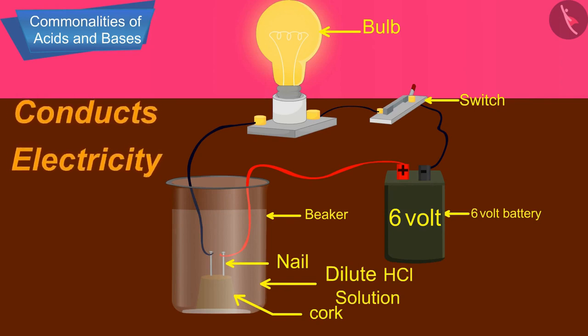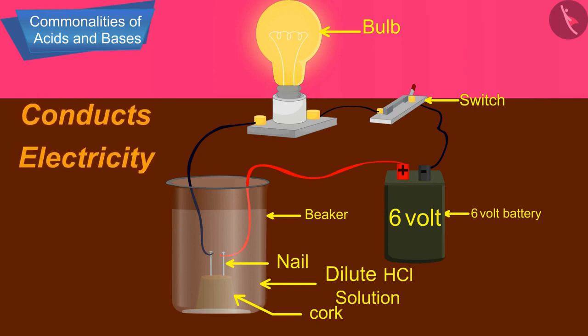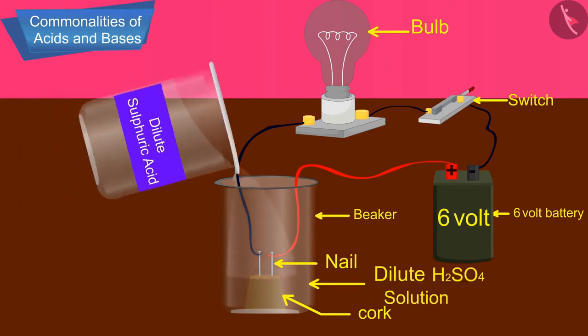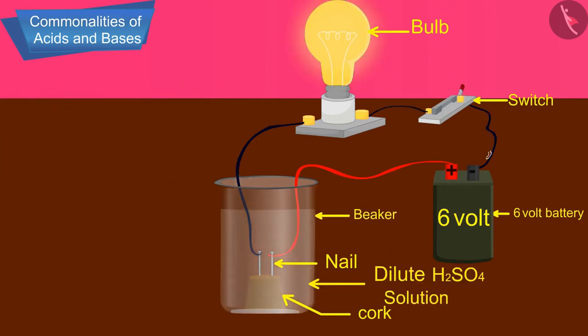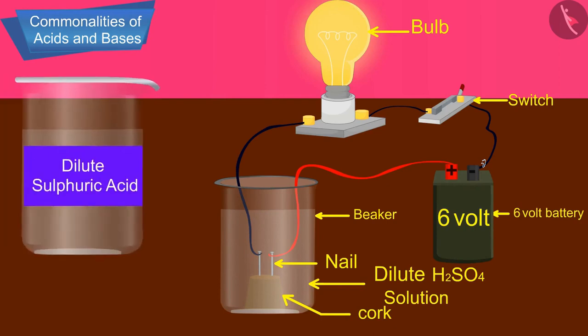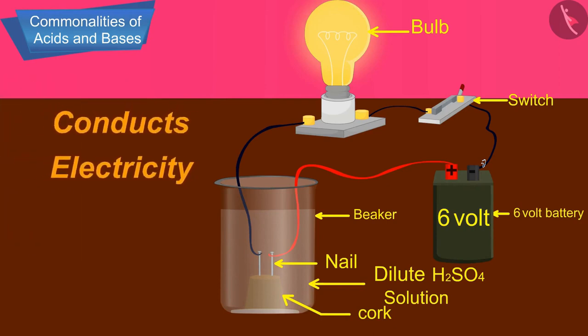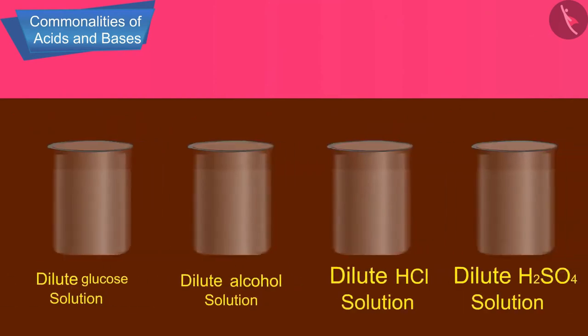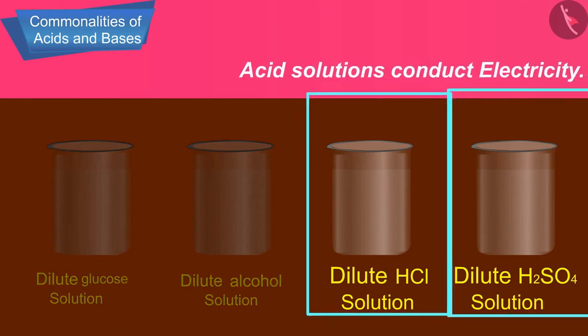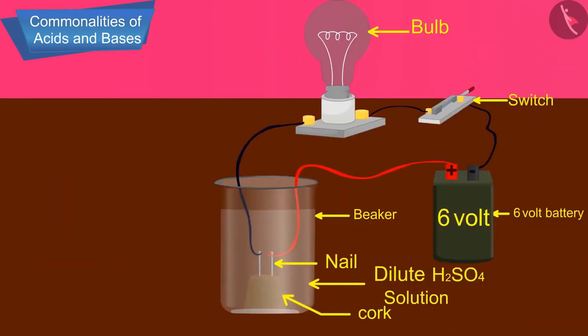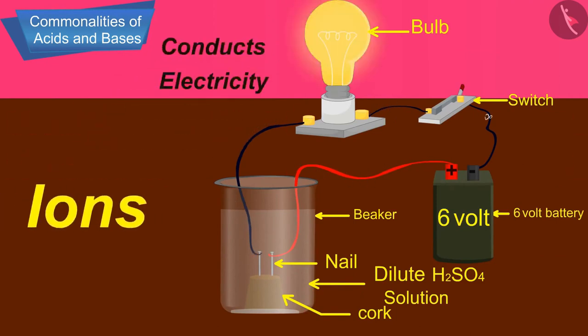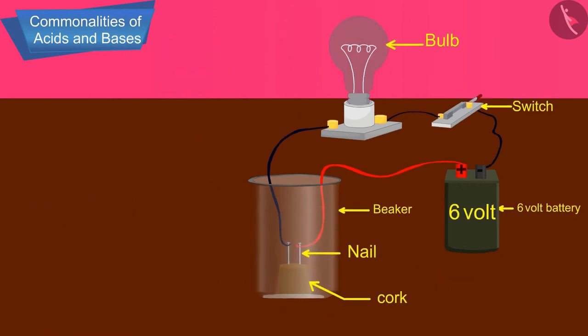What do you observe? The bulb starts glowing. This shows that hydrochloric acid solution taken in the beaker conducts electricity. If we repeat this experiment by taking sulfuric acid, the bulb glows again, showing that sulfuric acid also conducts electricity. In fact, all acid solutions conduct electricity. The glowing of the bulb indicates that there is a flow of electric current through the solution, carried by ions.